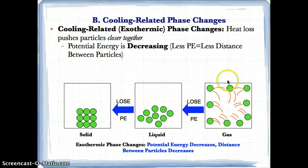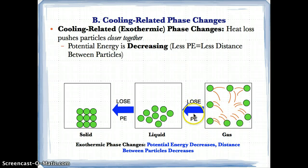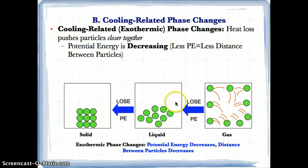Let's start with the particles with the greatest distance and go down to those with the least, since in cooling-related phase changes we're losing distance, potential energy, or heat between the particles. Gas is the phase with the greatest distance between particles. If we lose heat, we lose potential energy, and as a result of losing potential energy, we lose distance between the particles — so much so that it comes closer together and becomes a liquid.